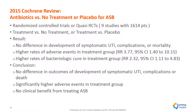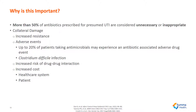So there is no clinical benefit from treating asymptomatic bacteria. More than 50% of antibiotics prescribed for presumed urinary tract infection are considered unnecessary or inappropriate. Antibiotics come with what's called collateral damage — we can predispose the patient to increased resistance as well as adverse events. Up to 20% of patients taking antimicrobials may experience an antibiotic-associated adverse drug event. We also predispose the patient to Clostridium difficile-associated diarrhea, increased risk of drug-drug interactions especially in older patients on several medications, as well as increased cost to the healthcare system and the patient.